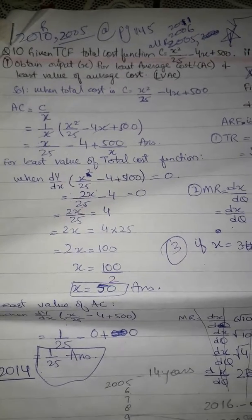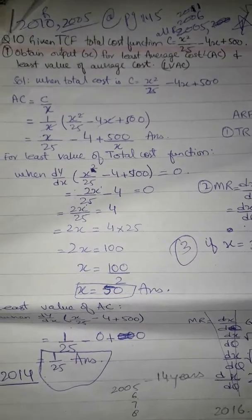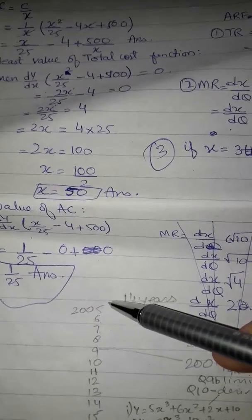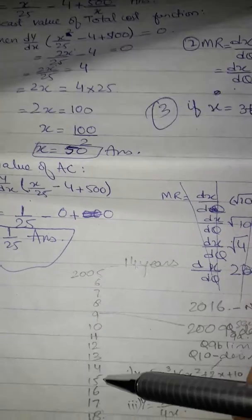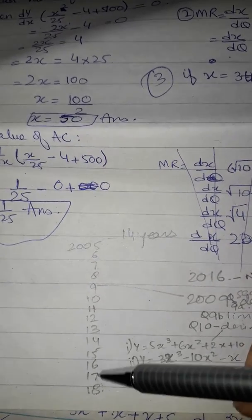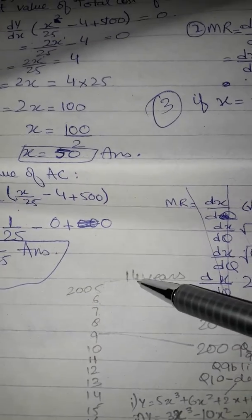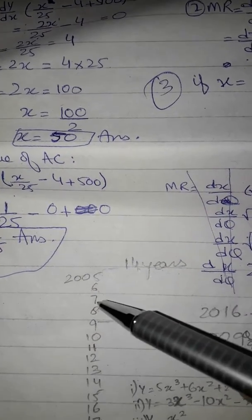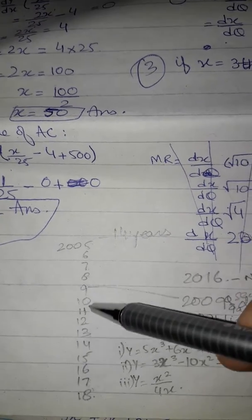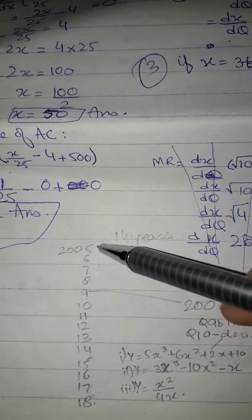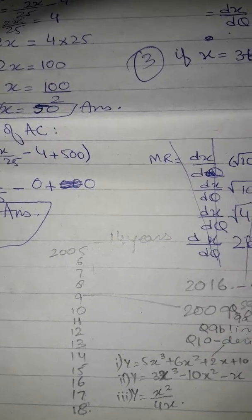We are covering the economics math section paper from 2005 to 2017-18, which makes 14 years of past papers.